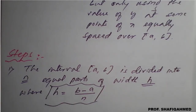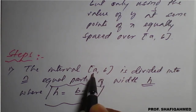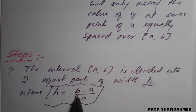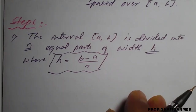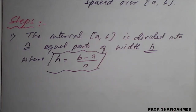The formula for width will be h equals b minus a divided by n, where b is the upper limit value from the integral and a is the lower limit value. Upper limit minus lower limit, divided by n, where n is the number of given data points. The x values vary as x₀, x₁, x₂, x₃, and so on up to xₙ.